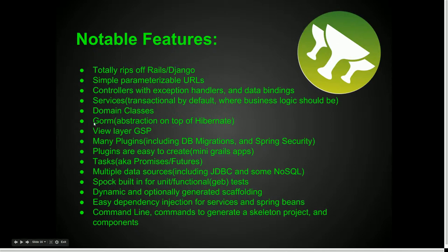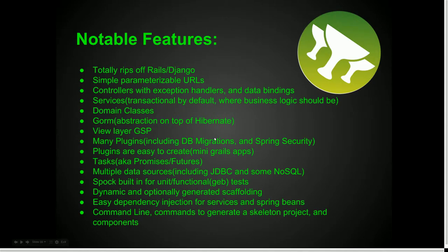It has services, which are transactional by default, which is where all your business logic should be. Domain classes lend themselves to GORM, which is an ORM based on top of Hibernate. GSP is kind of like JSP — this is your view layer, which if you're using a front-end JavaScript framework you probably won't use much, but if you're not, this is where you create your views. One of the biggest things in Grails is its plugins, which add a lot of functionality like database migrations and security. These plugins are essentially like mini Grails apps, so they're very easy to create, which is why there are so many of them.